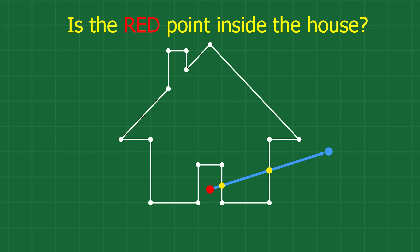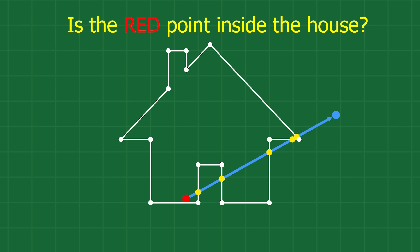If the number of intersections is even, you must have started outside the shape. If the number of intersections is odd — like this simple example here — then you started inside the shape. Here's one more quick example: this one has one, two, three, four, five intersections — so that's odd, meaning we started inside the shape.